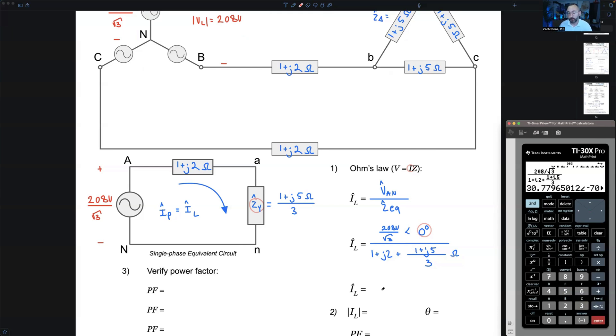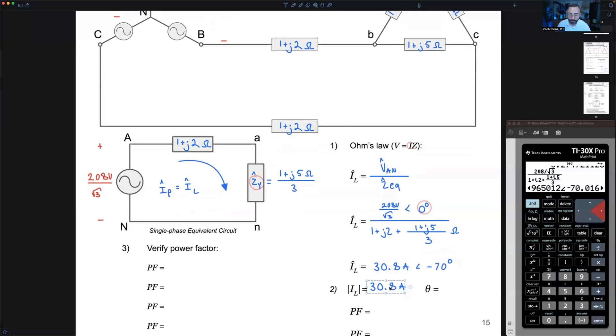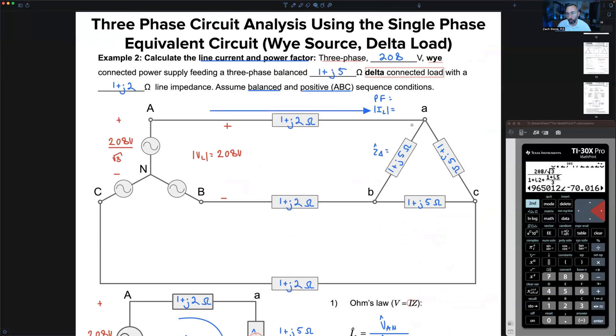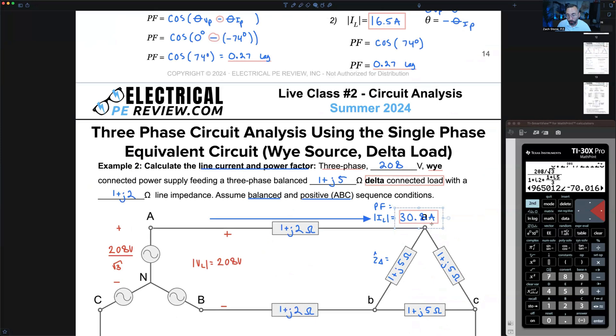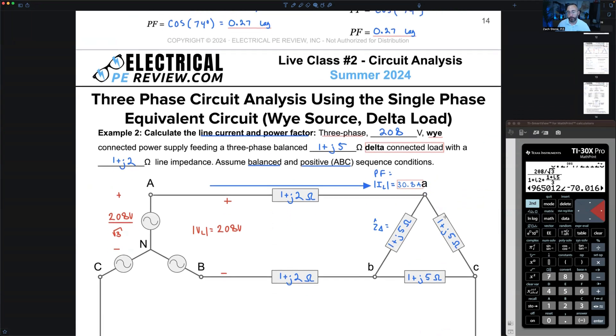What does everyone get for the complex line current? This is 30.8 amps, I'm going to round to one decimal. An angle of negative 70 degrees. Problem asks for the magnitude, so I'm just going to drop the angle. We're drawing 30.8 amps if we round to one decimal place, or about 31 amps if we round to the nearest whole amp.